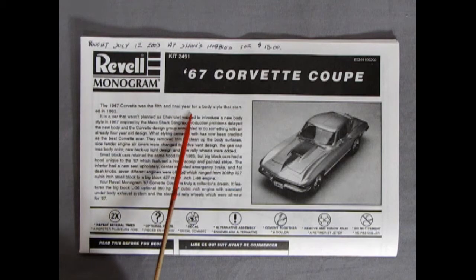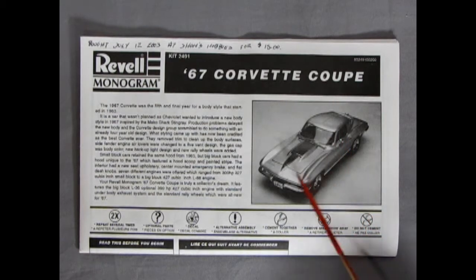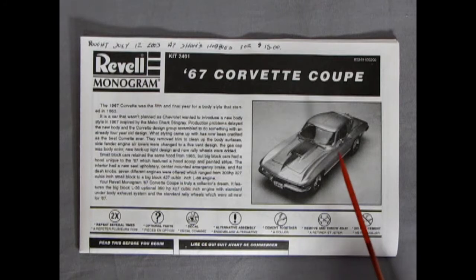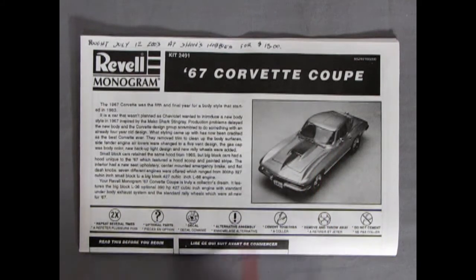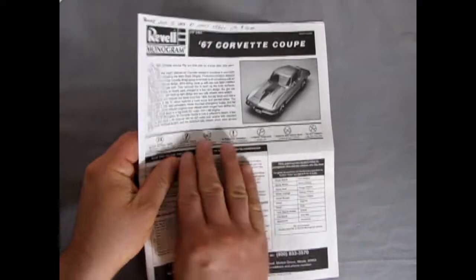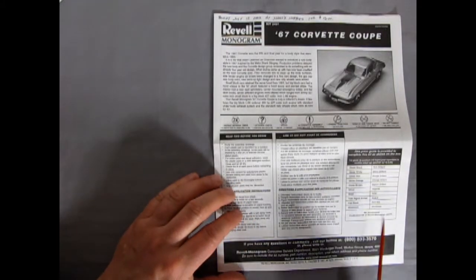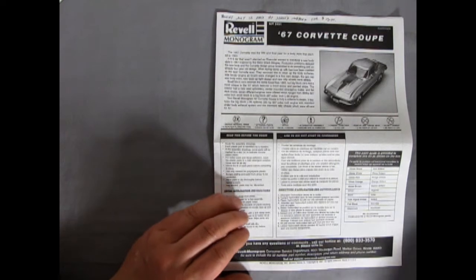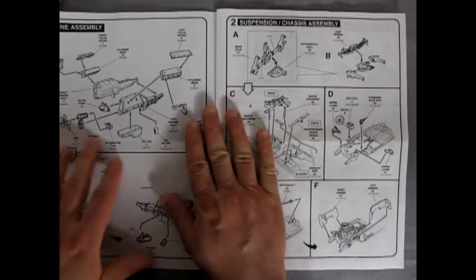It says the 67 Corvette was the fifth and final year for a body style that started in 1963. So this kit, of course, or car actually, has all the refinements and lessons learned in making a better sports car from the actual 1963. Because in 1963, it had the split window, it had a smaller engine, and all that kind of stuff. And then the 67, of course, being the final year, had the best of it all. So the instruction sheet here folds out into the larger panels. Let me just move that over there. Of course, it has the paint guide and the phone number, which I don't know if that still applies anymore. Anyway, copyright 1997. So this kit has been around for quite a good history.